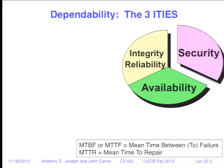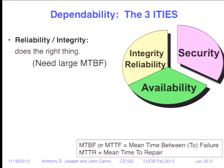To talk about fault tolerance, we have to discuss the three properties: integrity, reliability, availability, and security — security is covered in the next two lectures. Reliability or integrity means your system does the right thing. For example, you go to withdraw $50 from your bank account and the system correctly debits your account for $50 and gives you $50. Incorrect would be if it debits $50 and nothing comes out of the machine. To have reliability and integrity, we need a very large mean time between failure — the average time between when something is working and when it stops working.